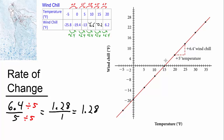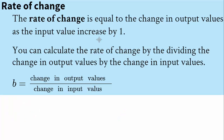Notice how the graph of the windchill problem shows us the same thing. For every 5 degree increase in temperature, the windchill increases 6.4 degrees. So we see the rate of change in the table and also in the graph. The rate of change is equal to the change in output values as the input value increases by 1. You can calculate the rate of change by dividing the change in output values by the change in input values. In our equation, that will be the letter B.